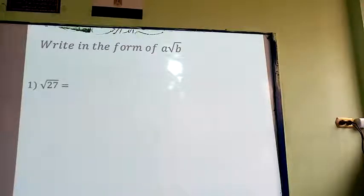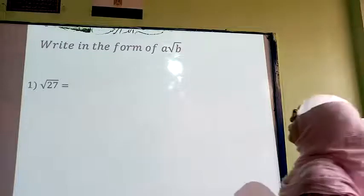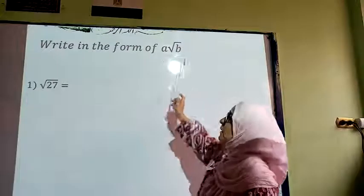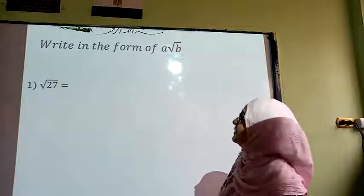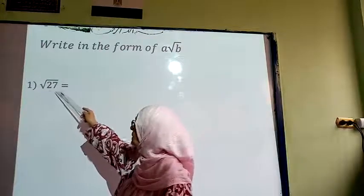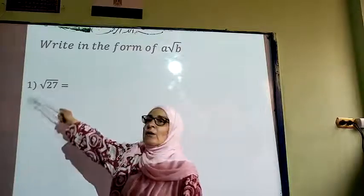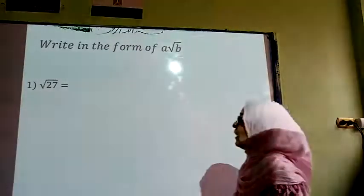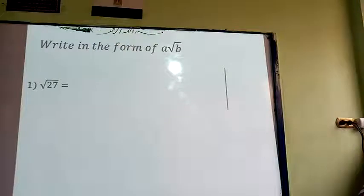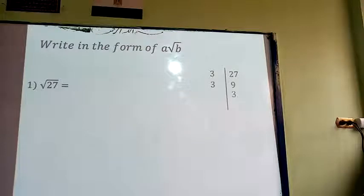What do we mean by writing in the form A·root(B)? This means we can factorize the number and see if we can move one of the numbers outside the root. Let's check 27: 27 is 3×3×3, which is the factorization of 27.